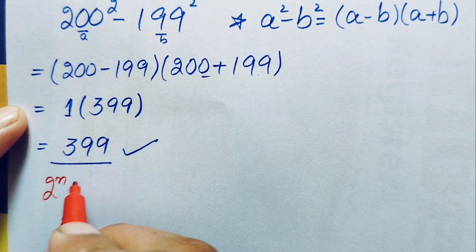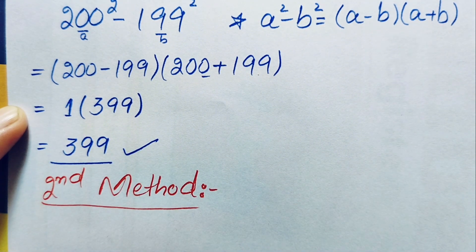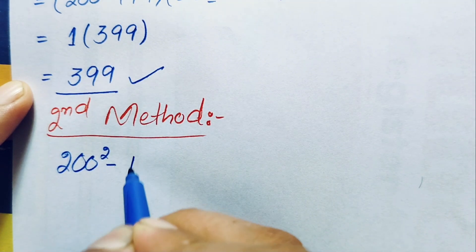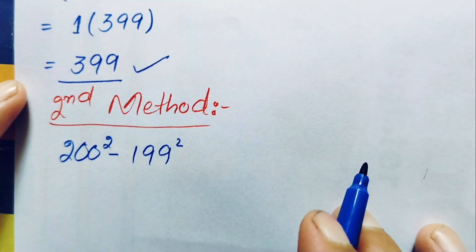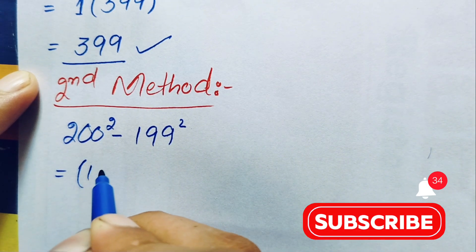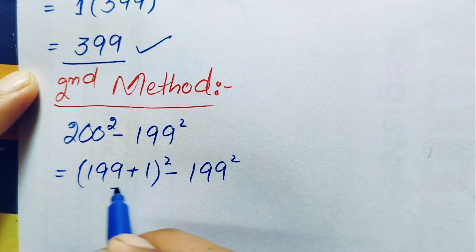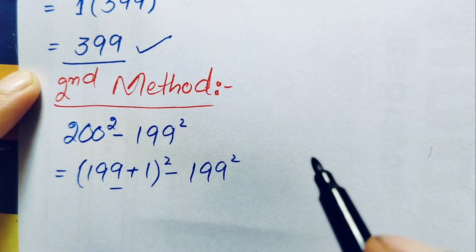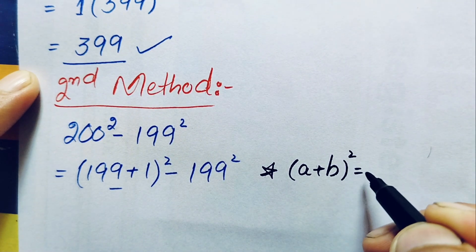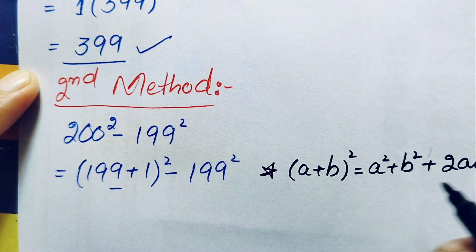Now for the second method, we again write the question: 200 squared minus 199 squared. Here we can write 200 as 199 plus 1, whole squared, minus 199 squared. In the first term we will use the algebraic identity: a plus b whole squared is equal to a squared plus b squared plus 2ab.